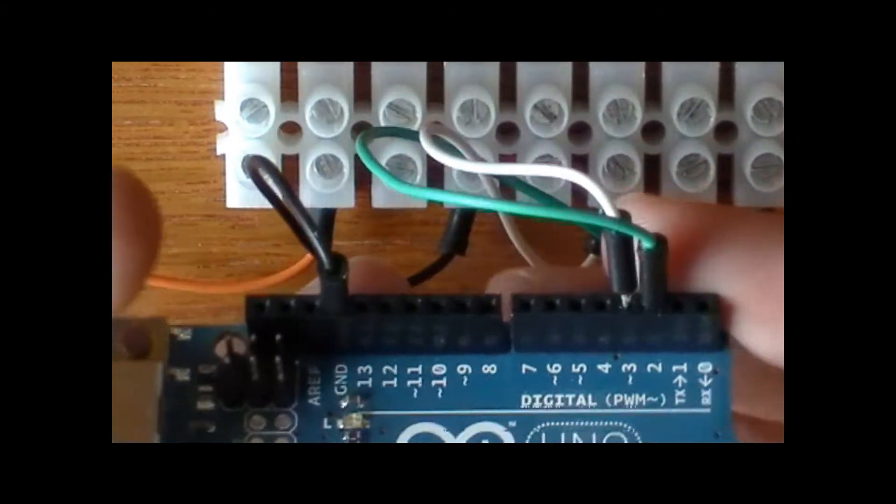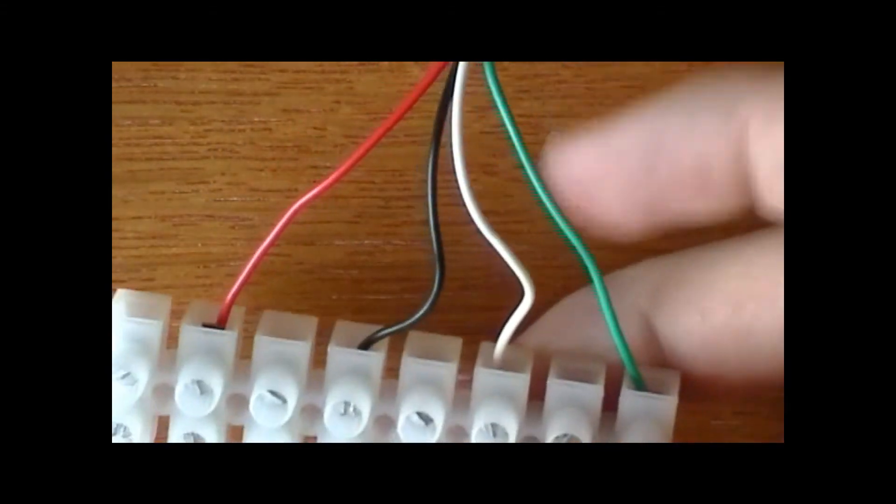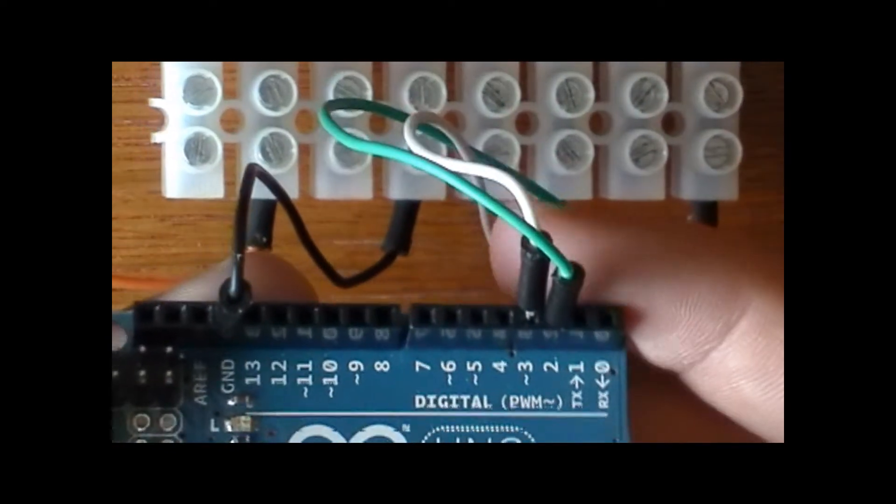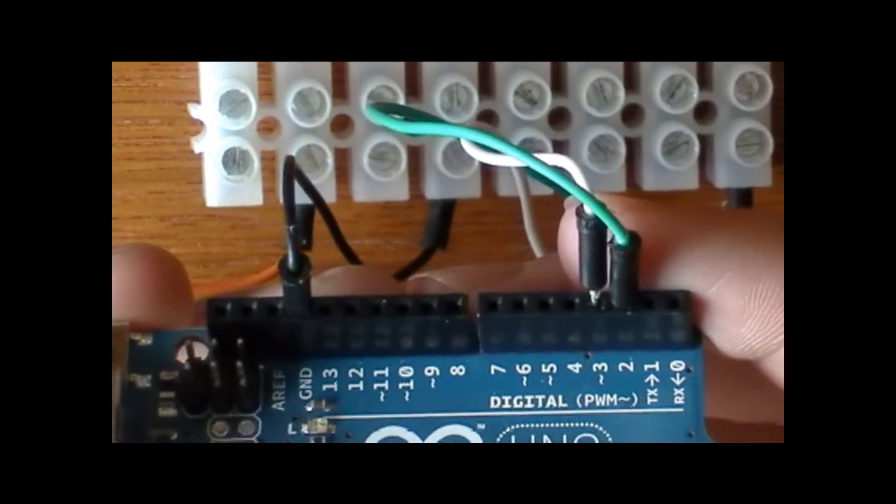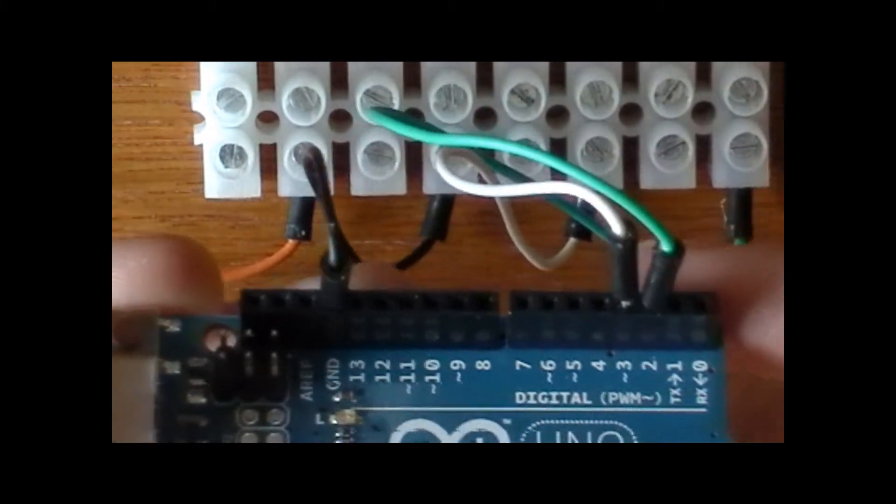So you got your green line, which is the same green line from your RFID reader there. I have that going into pin 2. Then I have the white line going into pin 3.